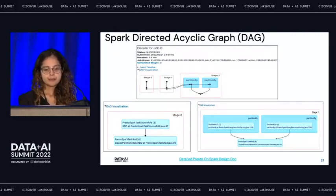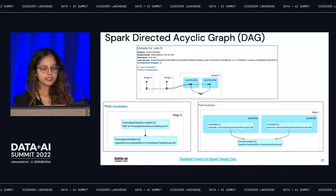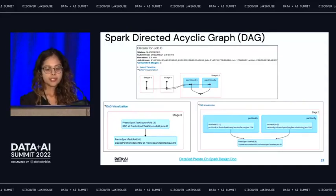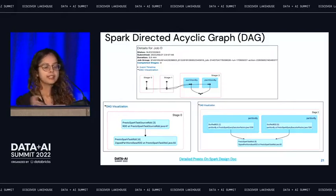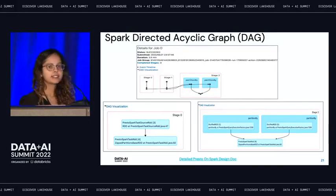Let's look at the Spark DAG — this is what you'll see on the Spark UI. Stage zero and one correspond to the scan inputs, and stage two is where you do the shuffle and join. An important thing to note is that Presto uses custom RDDs — specifically Presto Spark Task RDD, which extends ZIP RDD, meaning you can arbitrarily join N number of RDDs. Presto Task RDD represents a stage of execution. Within each RDD's compute method, it's the Presto evaluation library and codebase that execute.